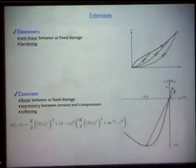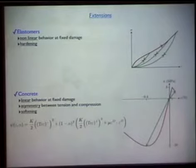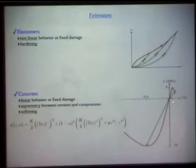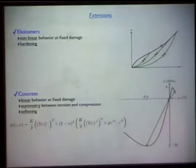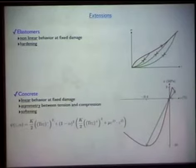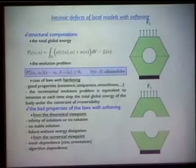We can use this type of model for elastomers — the behavior is the same type as that presented by Michel, except there are no loops here; I consider loading and unloading to be reversible. We can also use it for concrete, where a key point is that concrete behaves completely differently in tension and compression. To capture this you must account for the sign of epsilon in the elastic energy expression, which automatically yields a different elastic domain in tension versus compression.